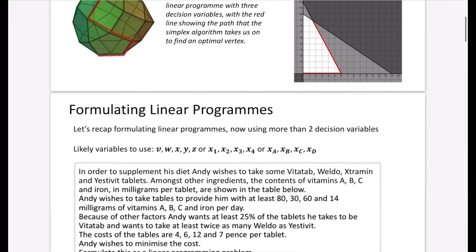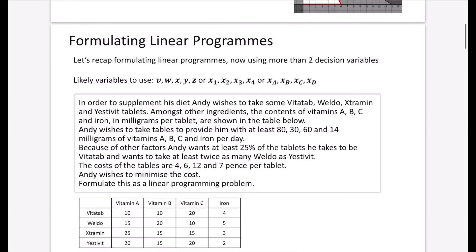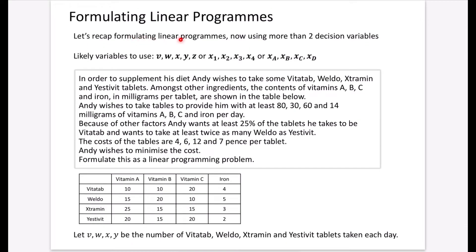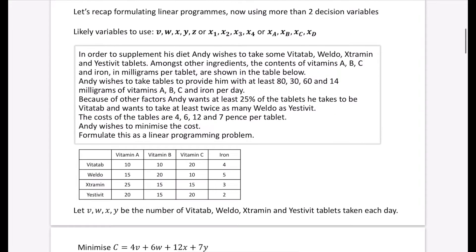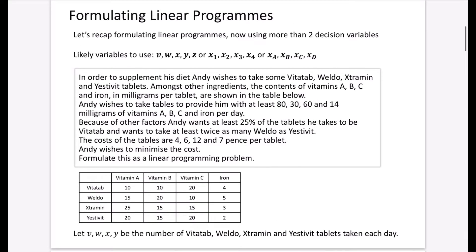Let's remind ourselves about how we formulate linear programs. We're going to recap formulating these, but this time we're going to have more than two decision variables, introducing us to that new style of questions. The likely variables to use will be from the end of the alphabet - you may use x1, x2, x3, x4 with subscript numbers, or subscript letters. It's really just a complete recap of what we did in Chapter 6.